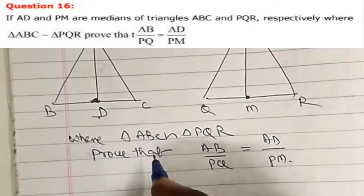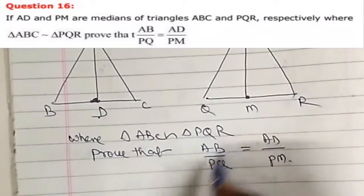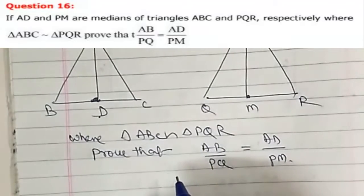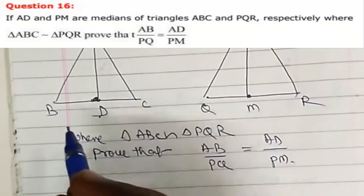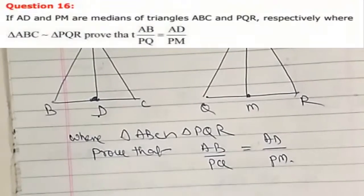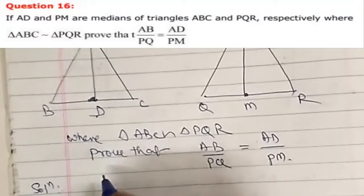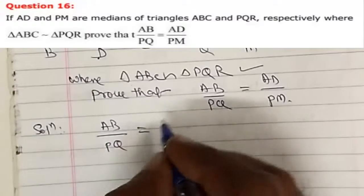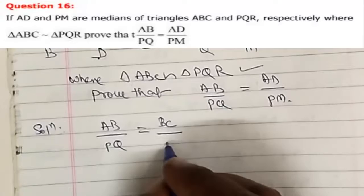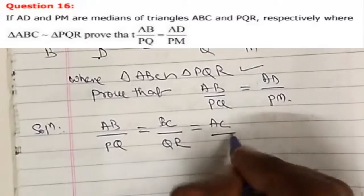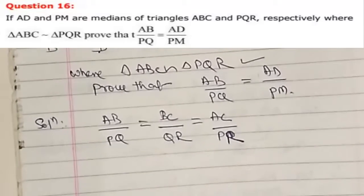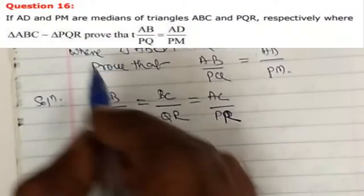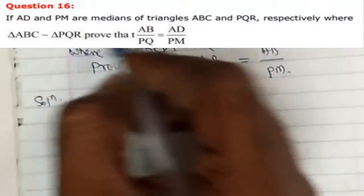First, let's see what is given. Triangle ABC is similar to PQR. Since ABC is similar to PQR, the ratios of the corresponding sides of both triangles are equal. So AB divided by PQ is equal to BC divided by QR, which is equal to AC divided by PR.